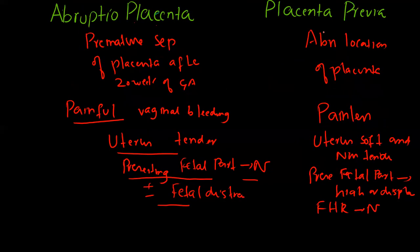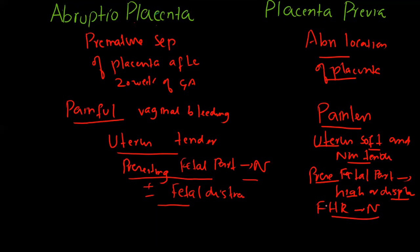Placenta previa is defined as abnormal location of the placenta near, partially, or completely over the internal cervical os. The patient presents with painless vaginal bleeding. On examination the uterus is soft and non-tender. The presenting fetal part is high and displaced, and the fetal heart rate is normal.